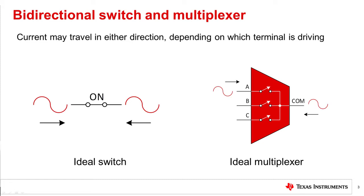This basic idea can be applied to analog muxes as well. Let's look at a diagram of an ideal three-to-one mux. Only one path is conducting at a time and current may flow in either direction. Either terminal may be used as the input or output. This means that one of three inputs — A, B, or C — may be selected to conduct to the output COM, or one input COM may conduct to the selected output, either A, B, or C. Bidirectional muxes may be used as both multiplexers and demultiplexers.